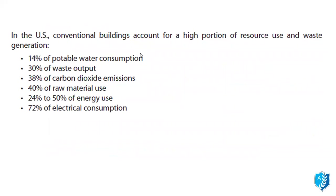In the U.S., conventional buildings account for a high portion of resources used and waste generation: 14% of portable water consumption, 30% of waste output, 38% of carbon dioxide emissions, 40% of raw material use, 24 to 50% of energy use, and 72% of electrical consumption — these are done through the buildings that we architects and designers design.